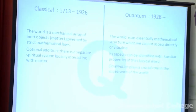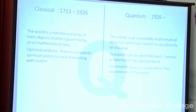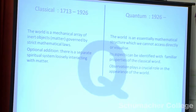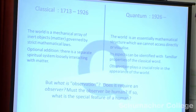Observation plays a crucial role in the appearance of the world. This is different from the classical picture. In the classical picture, the universe is there whether there is anyone to look at it or not. The question is: what is observation? We have this thing, the observer, but what is the observer? Does it have to be human? And if not, how far do you go?